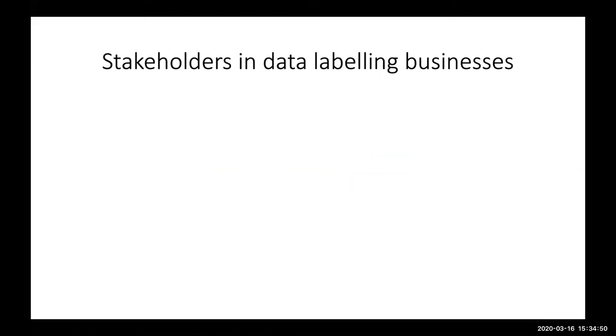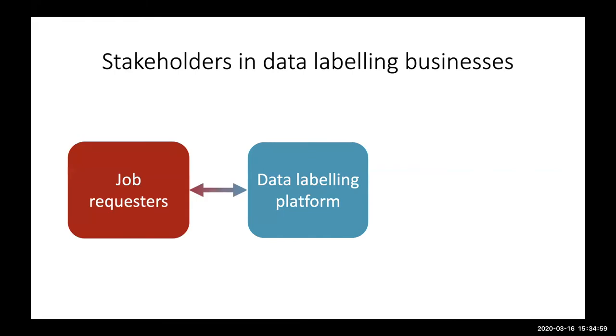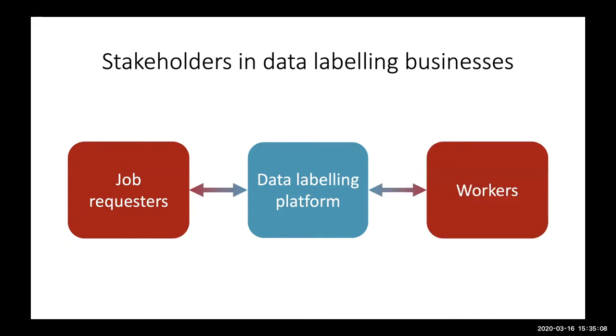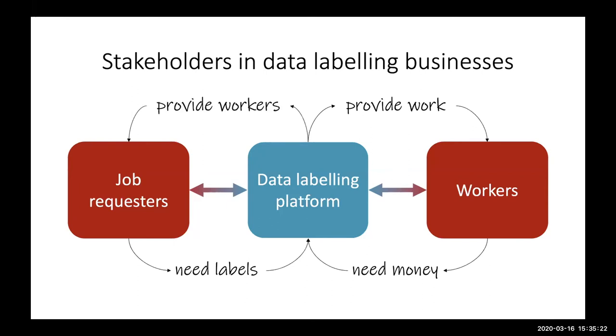So if we have a look at the stakeholders in this data labeling industry, we actually have three stakeholders. The first one are the data labeling platforms. And then we have the job requesters, which would be one of these tech companies who needs data for their machine learning methods. And then lastly, we have the workers who need a job. So the job requesters need labels for their data and the workers need money. And what the data labeling platforms do is that they provide work to the workers and they provide the workers to the job requesters, which actually then indirectly the workers provide labels directly to the job requesters.